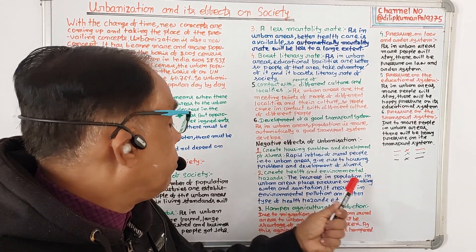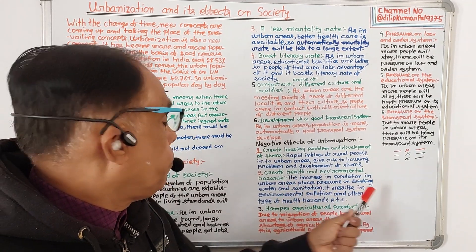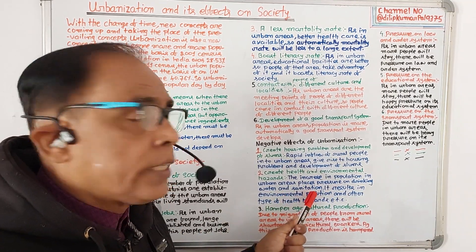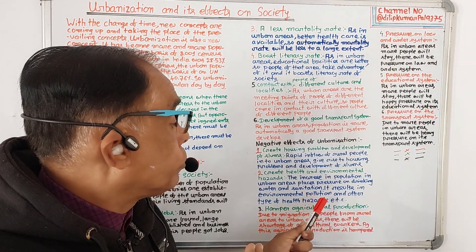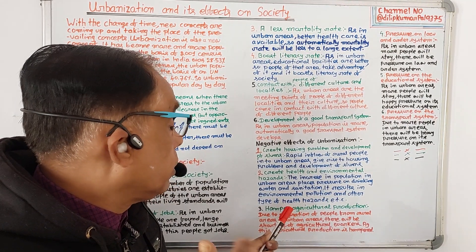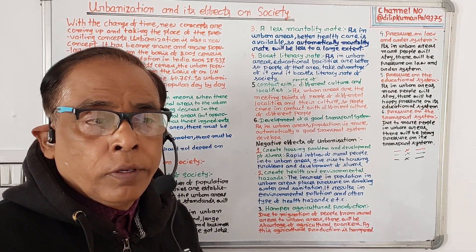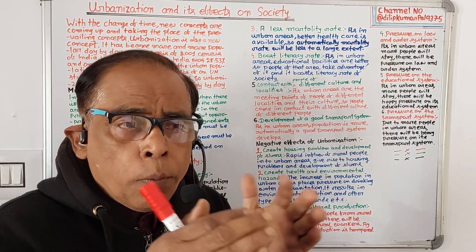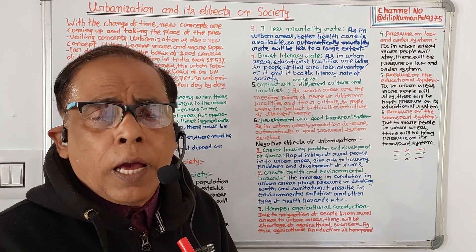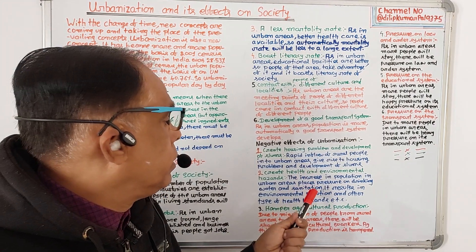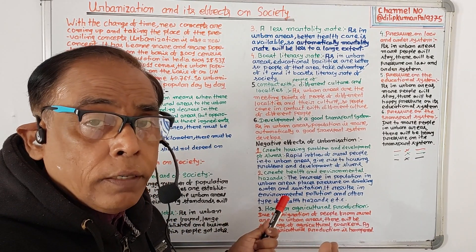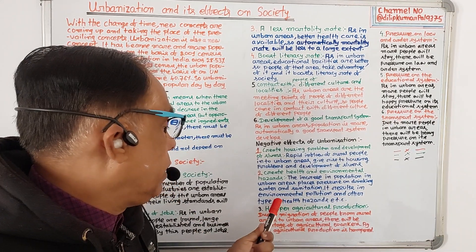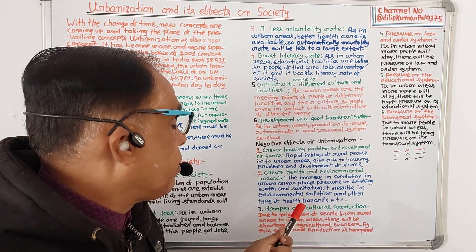Number two: it creates health and environmental hazards. The increase in population in urban areas places pressure on drinking water and sanitation. It results in environmental pollution and other types of health hazards.